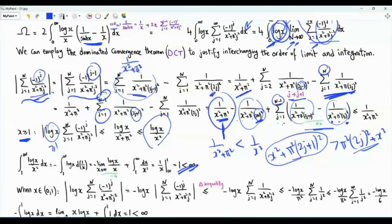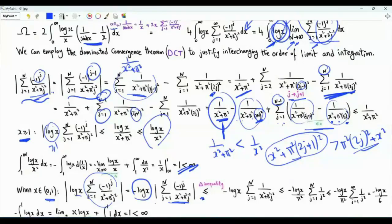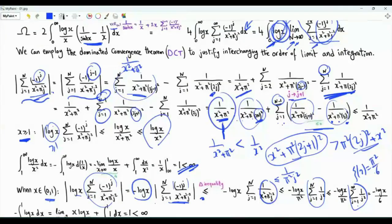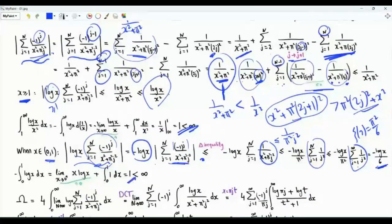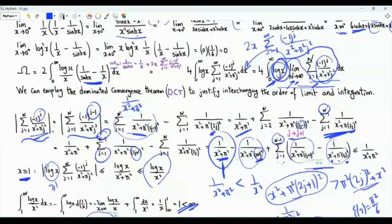Our original integration is from zero to infinity, so we also handle x strictly between zero and one. Here the absolute value of log x is minus log x. Applying the triangle inequality, the magnitude of the sum is less than or equal to the sum of the magnitudes, and since the magnitude of minus one to the j is one, the sum is bounded by one over pi squared j squared. Summing from one to infinity gives zeta of two, which is pi squared over six. So the magnitude of the integrand is upper bounded by minus log x over six for x between zero and one, which is integrable by parts.